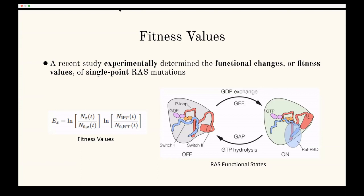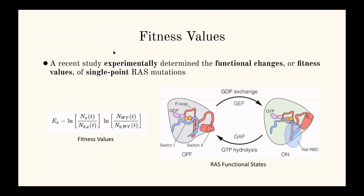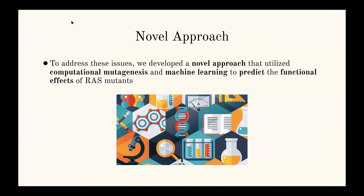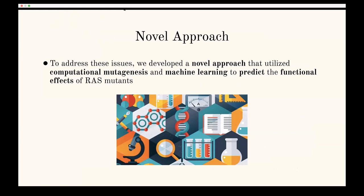With RAS, these researchers looked at all the different single point mutations — of which there are 3,135 — and determined their fitness values experimentally in a lab using a technique known as saturation mutagenesis. Although this is an accurate method that yields great results, it is complicated, expensive, and time consuming. In this study, using computational biology techniques, we sought to develop a computational method to automate this for future studies, allowing us to look at not only RAS but also all other types of proteins linked to cancer and other diseases — including neurodegenerative diseases — by having a computational model analyze all of these mutations.